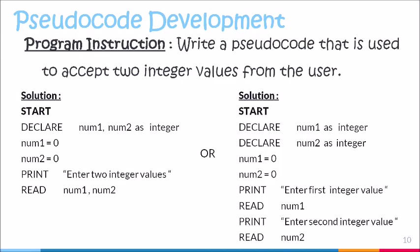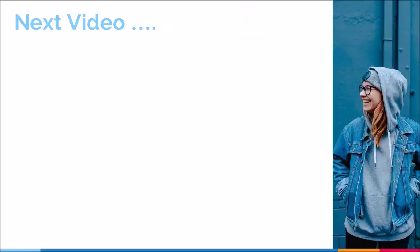Here we have another way in which the solution could have been constructed. We have keyword start, and instead of using one line for declaration, we're now declaring using two separate lines — first line declaring number one, second line declaring number two. Our initialization phase is the same across both solutions. But if you look at the prompt statements, they have been broken down into two separate pairs. For the first pair, we're asking the user to enter the first value. Remember that after each prompt statement, we normally have the respective input statement to accept the value being requested. The second pair asks the user to enter the second integer value, again followed by the read statement, which will be used to accept the entry that is made.